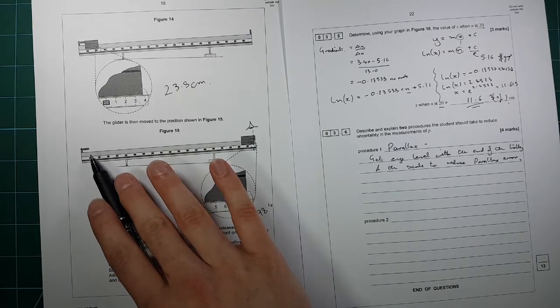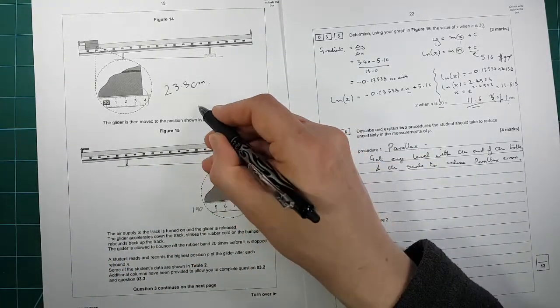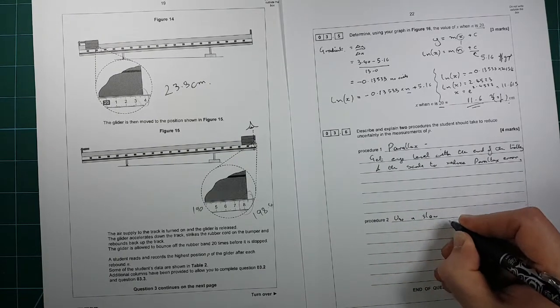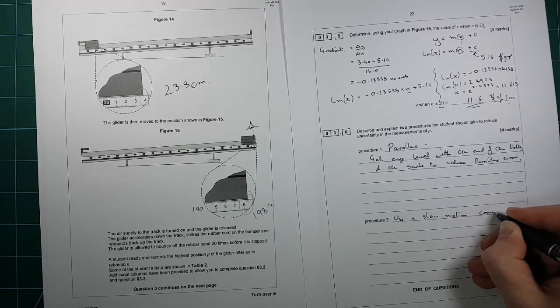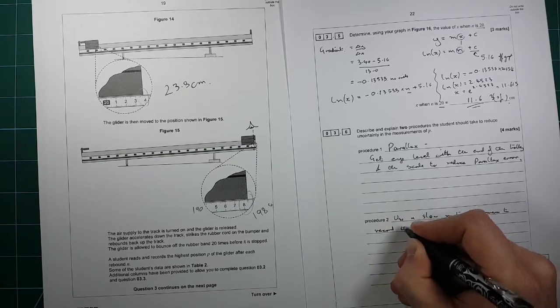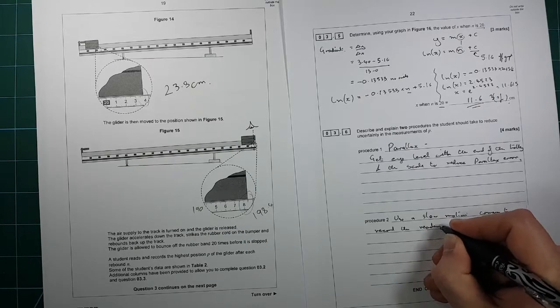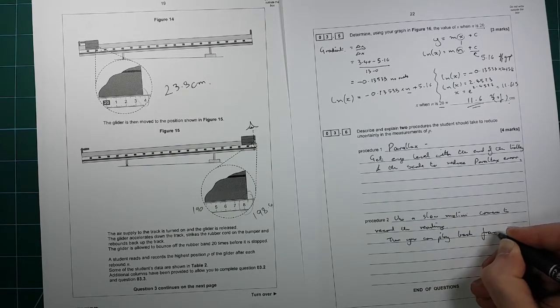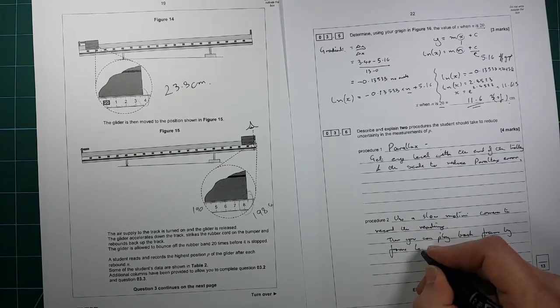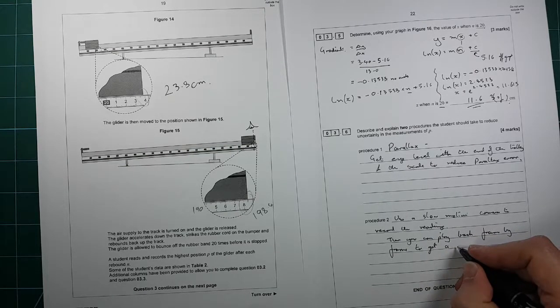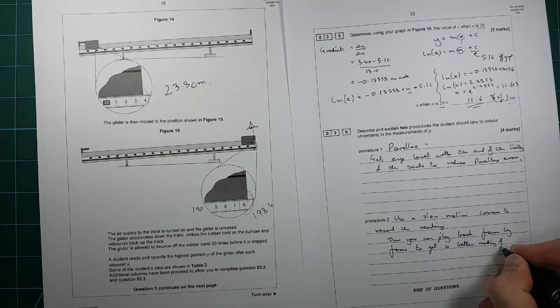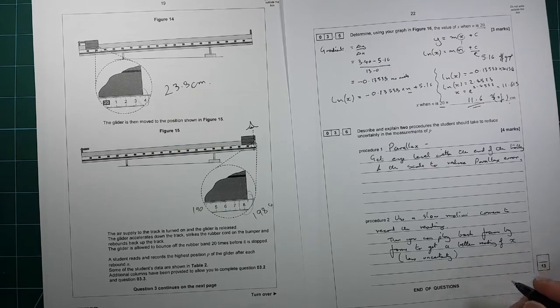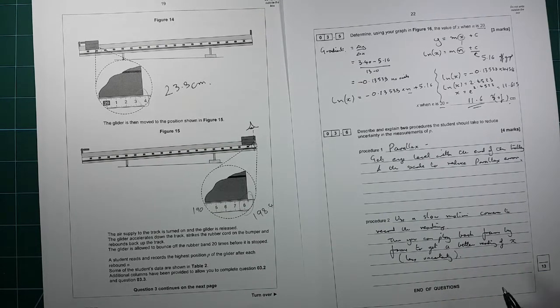So parallax error is when two things don't line up because of your viewing angle. So only if you're completely eye level with them do you get that. The second one I thought it would be difficult for you to figure out exactly when it got to the top. So I thought if you mounted a camera up here and took a video of it you could play it back frame by frame. Use a slow motion camera to record the readings then you can playback frame by frame. So you get a better reading of x plus uncertainty.